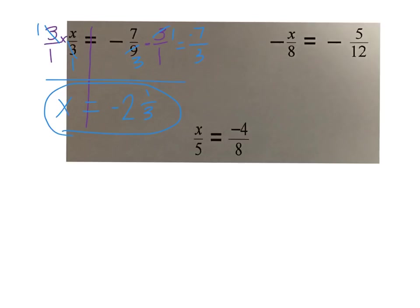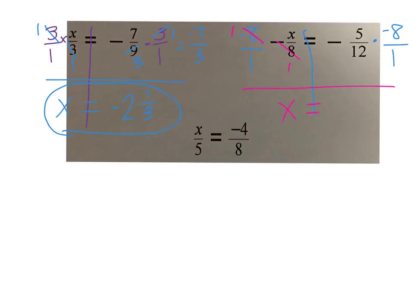The next one is the same exact idea: negative x divided by 8 equals negative 5 twelfths. Split it in half. It's dividing by a negative 8 — go ahead and attach that negative sign so you can simplify it out. So this is a negative 8 that I'm going to multiply by: negative 8 over 1 on both sides. On the left, the negative 8 and negative 8 cancel out to 1, so that is how I'm getting x on the left.